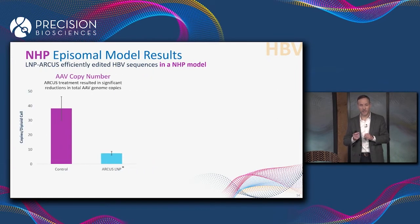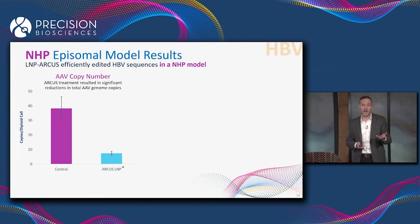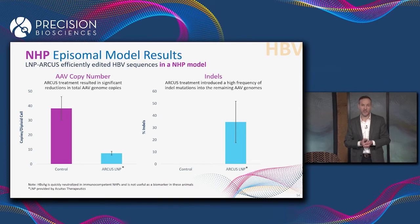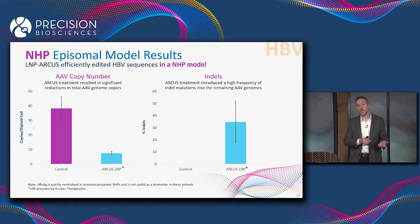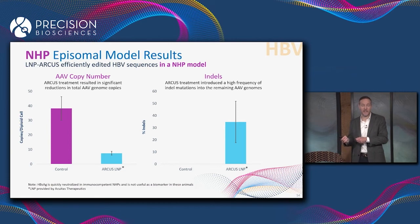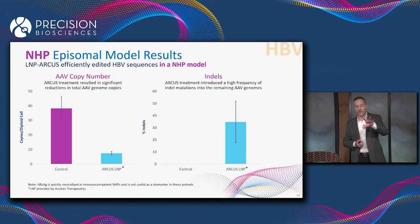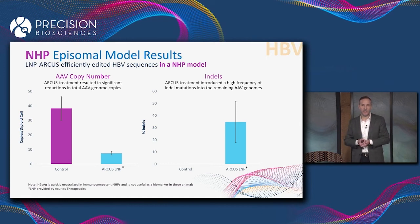We can also run the model in a non-human primate. In this case, we see even more significant reductions in total AAV copy number — total viral DNA — and the introduction of inactivating mutations into the genome. The non-human primate is immunocompetent, so the animal's immune system actually neutralizes the S antigen before we can detect it. S antigen isn't going to be a useful biomarker in primates, but between AAV copy number and indels, we have very good biomarkers for dose ranging studies in primates. We feel like we've overcome the major challenge in generating the IND-enabling data we're going to need for this program.